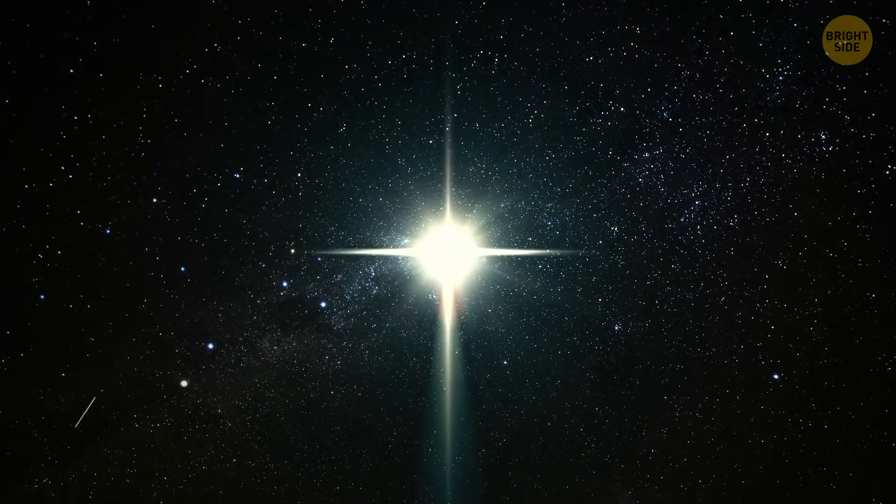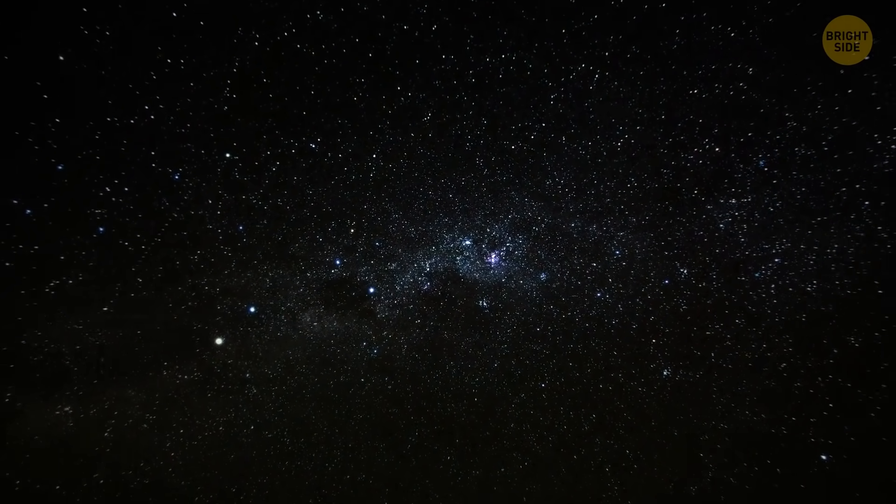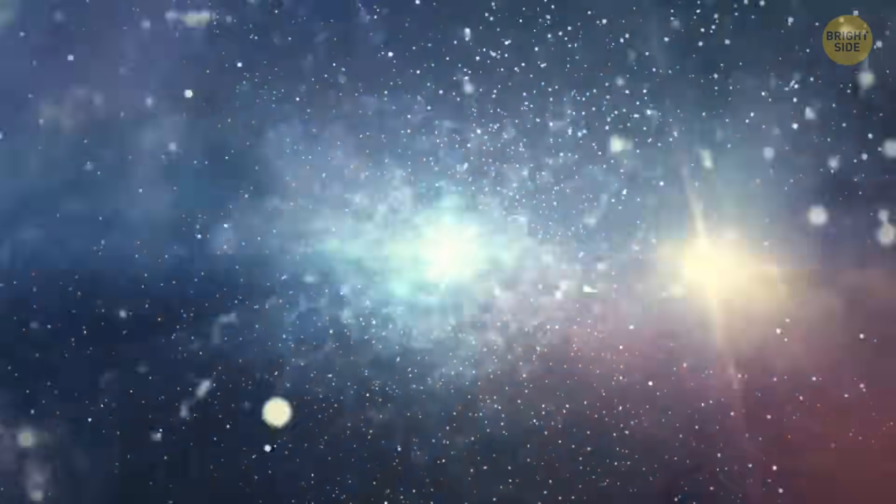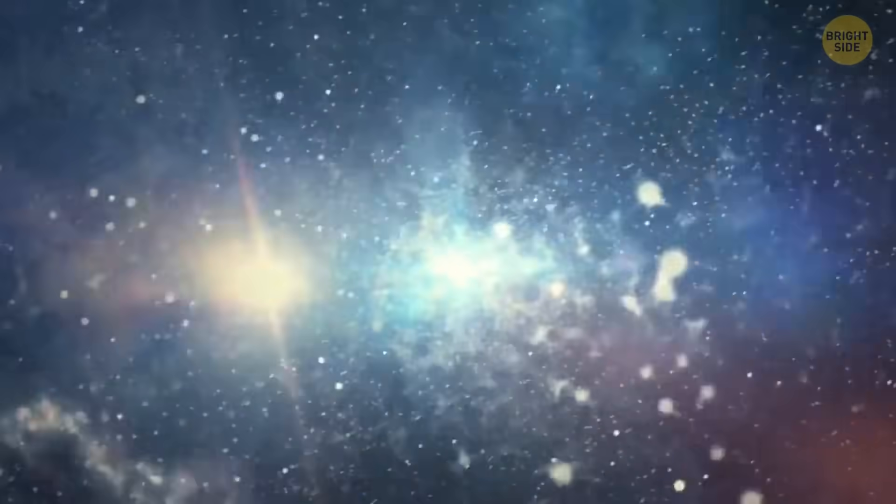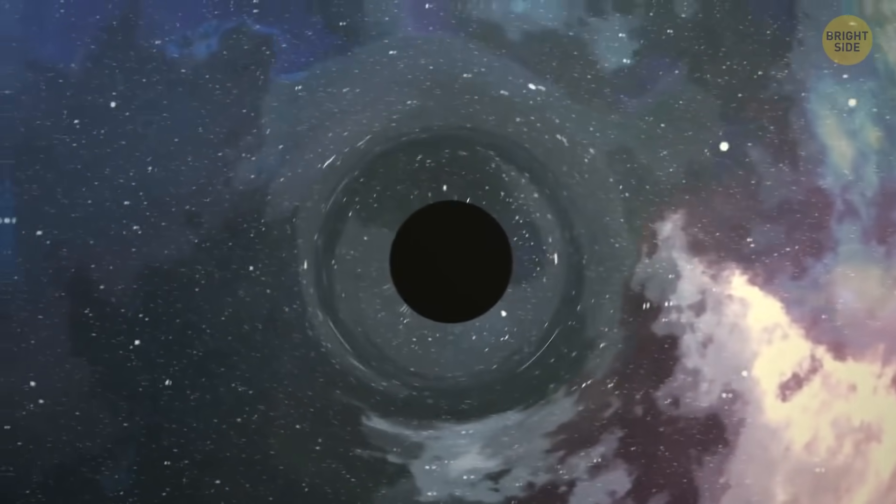When a powerful and massive star reaches the end of its life, it can't just fade into nothingness. One of the most likely scenarios, the star will run out of its nuclear fuel. Then, in a blazing flash of light, it'll collapse under its own gravity. If the star was large enough, it'll turn into a black hole.